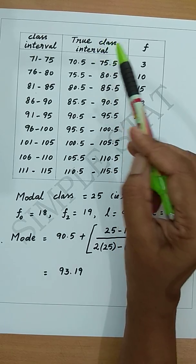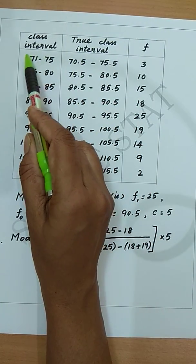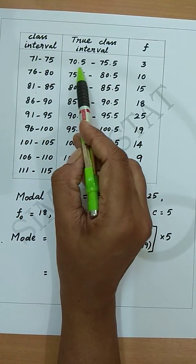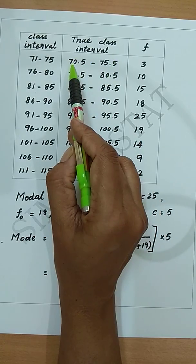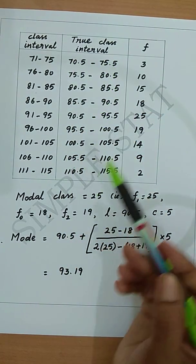find out the true class interval which is obtained by subtracting 0.5 from the lower limit and adding 0.5 to the upper limit. Therefore we get the first true class interval as 70.5 to 75.5. Similarly complete everything. Next, find